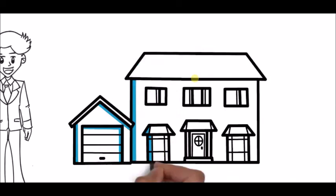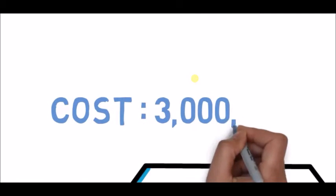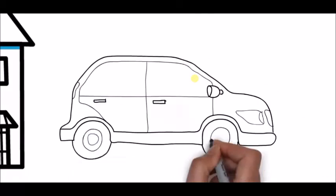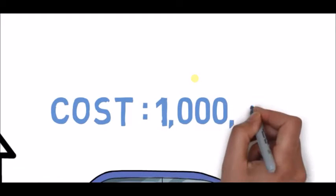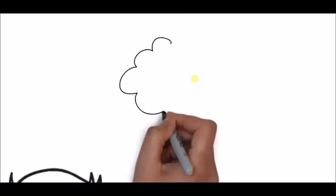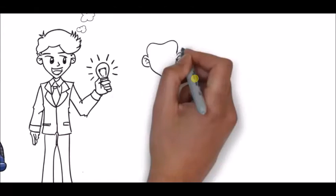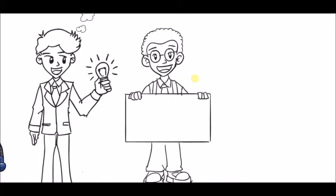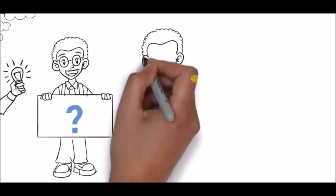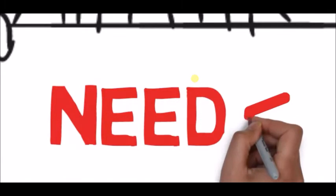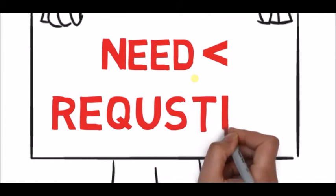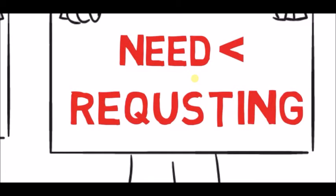Our first customer is Smith. Smith wants to buy a brand new house costing 30 lakh rupees, and also a car for 10 lakh rupees more. Since he doesn't have enough money, he's requesting a home loan of 40 lakh rupees. However, he only needs 30 lakh for the house — he is requesting more than he actually needs. So I do not provide him a loan because he is lying.